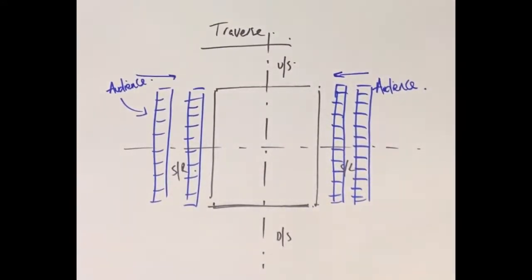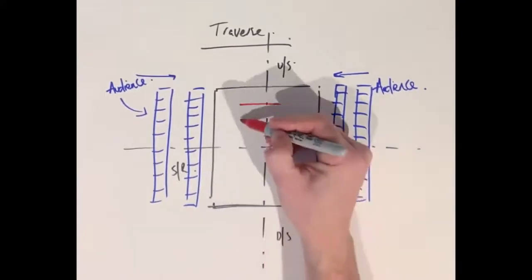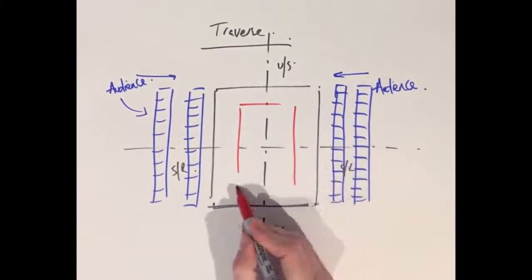Next step is to add some form of a set or rostra or platform in the middle of my stage space, which I label.